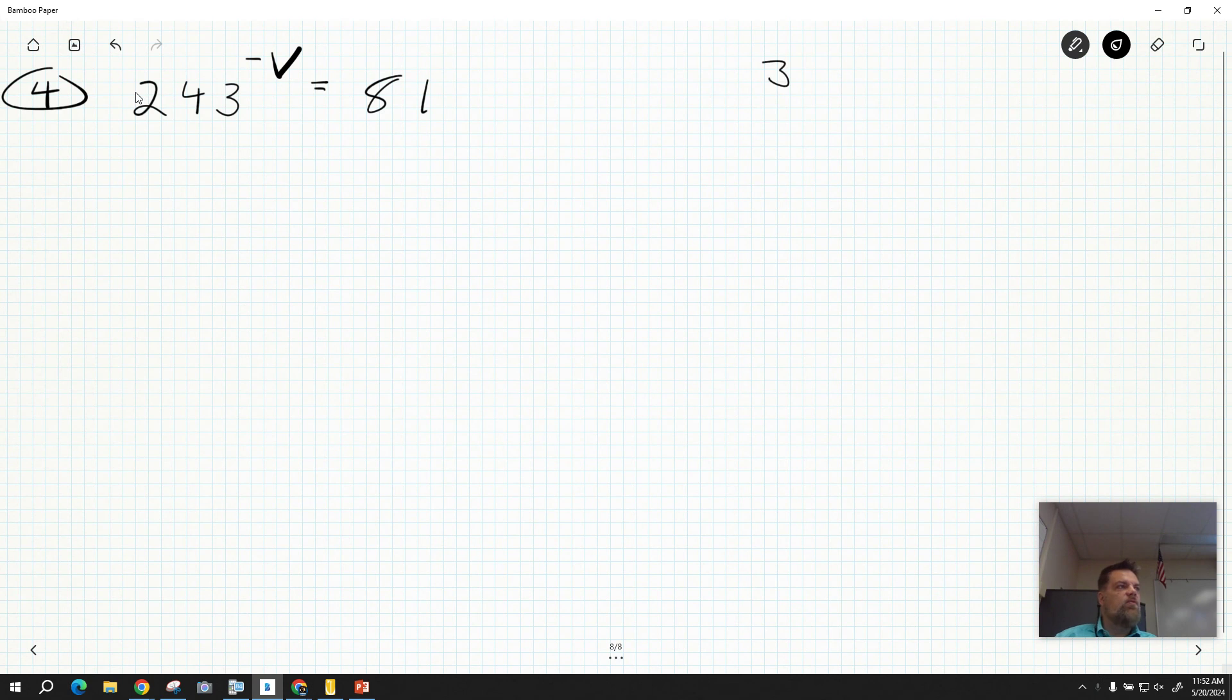Now, 3 to the first power is 3. 3 squared is 9. 3 to the third power equals 27. 3 to the fourth power equals 81, and 3 to the fifth power equals 243, right?